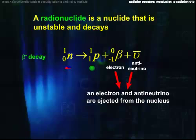Beta decay is when a neutron is changed into a proton and an electron and an antineutrino is ejected from the nucleus.